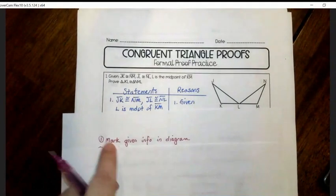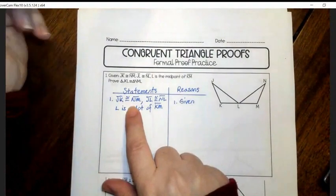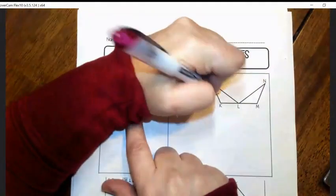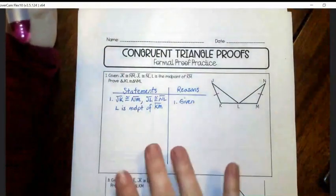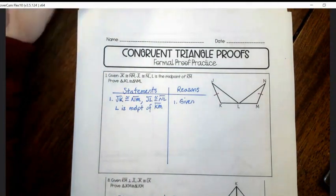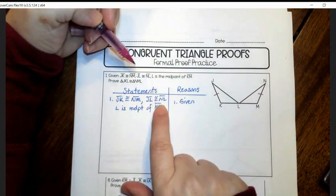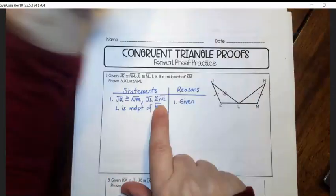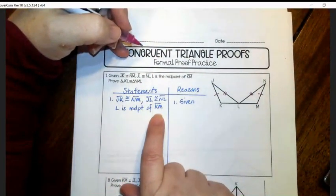So we have right here, I said the first thing to do is mark the given information in the diagram. So JK is congruent to NM. And this is the first time I wrote this part, but I haven't thought about how this proof is made. So I'll kind of go through my thought process on how to write this. The next thing it says JL is congruent to NL. So it looks like that. And then L is the midpoint of KM.